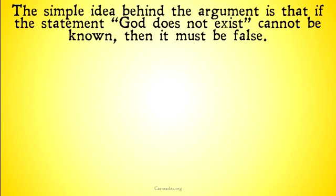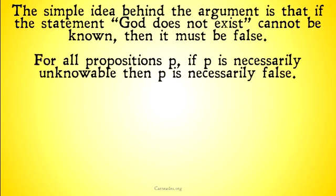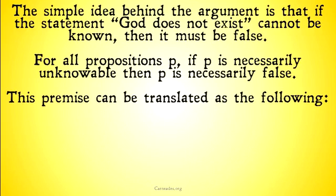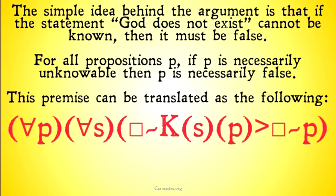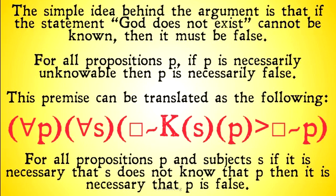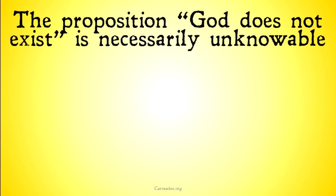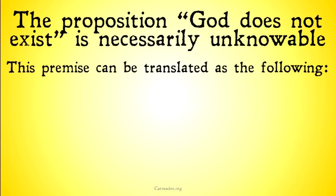The simple idea behind the argument is that if the statement 'God does not exist' cannot be known, then it must be false. For all propositions P, if P is necessarily unknowable, then P is necessarily false. This premise can be translated as: for all propositions P and all subjects S, if it is necessary that S does not know that P, then it is necessary that P is false. The proposition 'God does not exist' is necessarily unknowable.